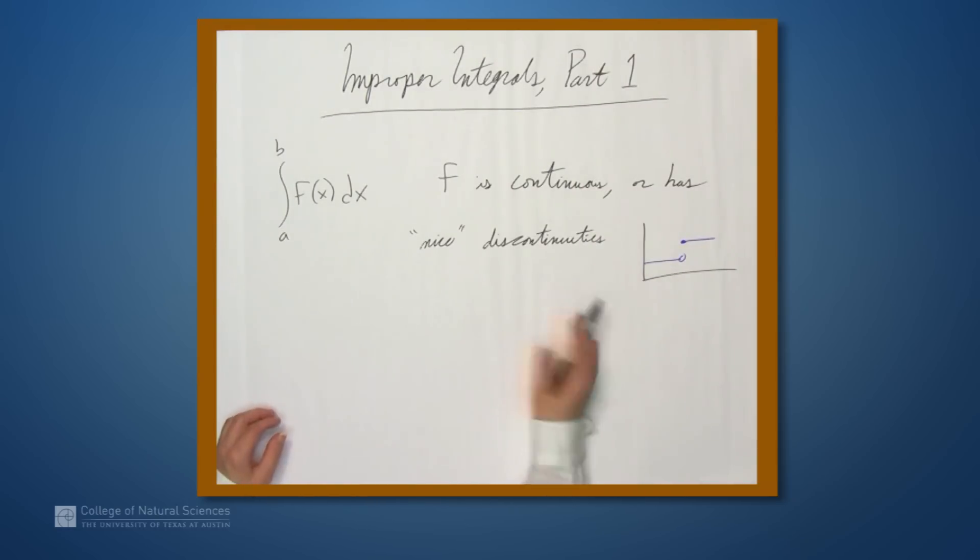But what happens if we want to look at something like 1 over x? So if we want to look at the integral from 0 to 1 of 1 over x dx, how can we make sense of this? Well, our normal technique isn't going to work because this function goes off to infinity as x goes to 0.